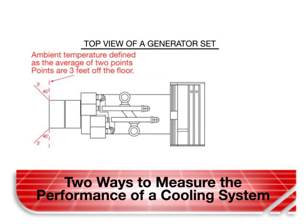When a cooling system is rated for ambient temperatures, what is measured is the temperature of air on the inlet side of the system before it picks up heat from the alternator and the engine components. This temperature is typically measured as an average of two points, as shown in the diagram. In the case of enclosed generator sets, the temperature is typically measured at the air inlet louver.